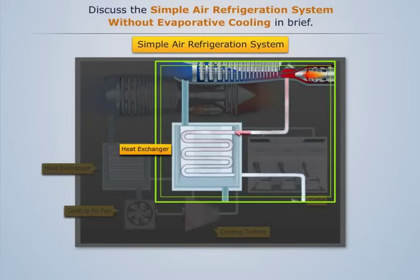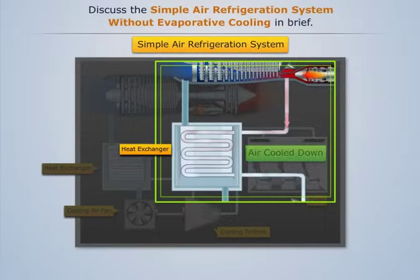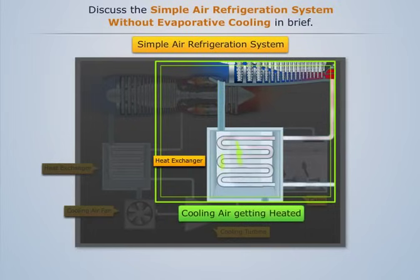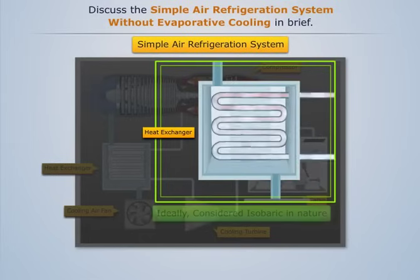This bled off air is sent to the heat exchanger, where it gets cooled down to a lower temperature by rejecting heat to the cooling air. This cooling air is obtained by bleeding off some portion of the air after ram compression. Ideally, this heat rejection process is considered isobaric in nature.